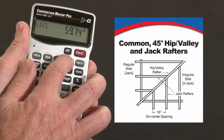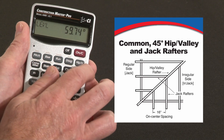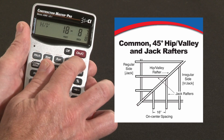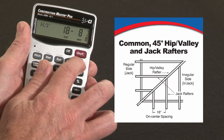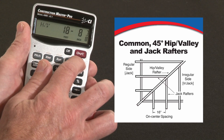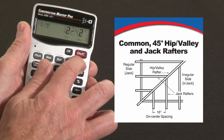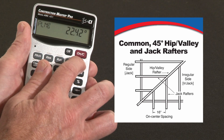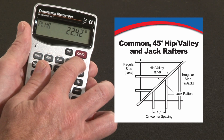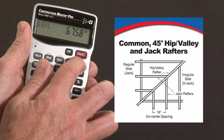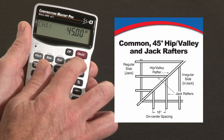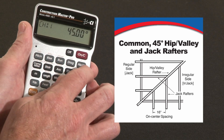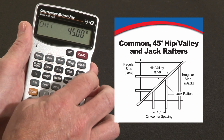Now if there's a 45 degree hip or valley coming off of here, I can press that. That would be 18 foot 8 and 7/8ths. It'll give me the cut angles for the hip or valley rafter as well. The cheek cut is going to be 45 degrees since this is a regular hip or valley.